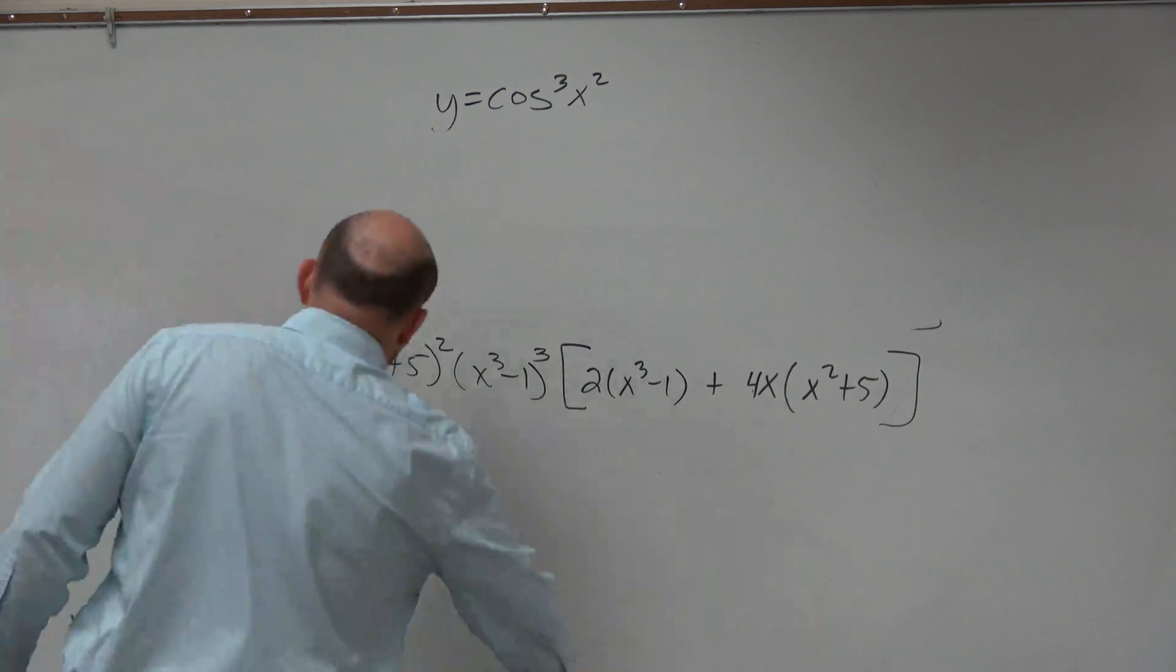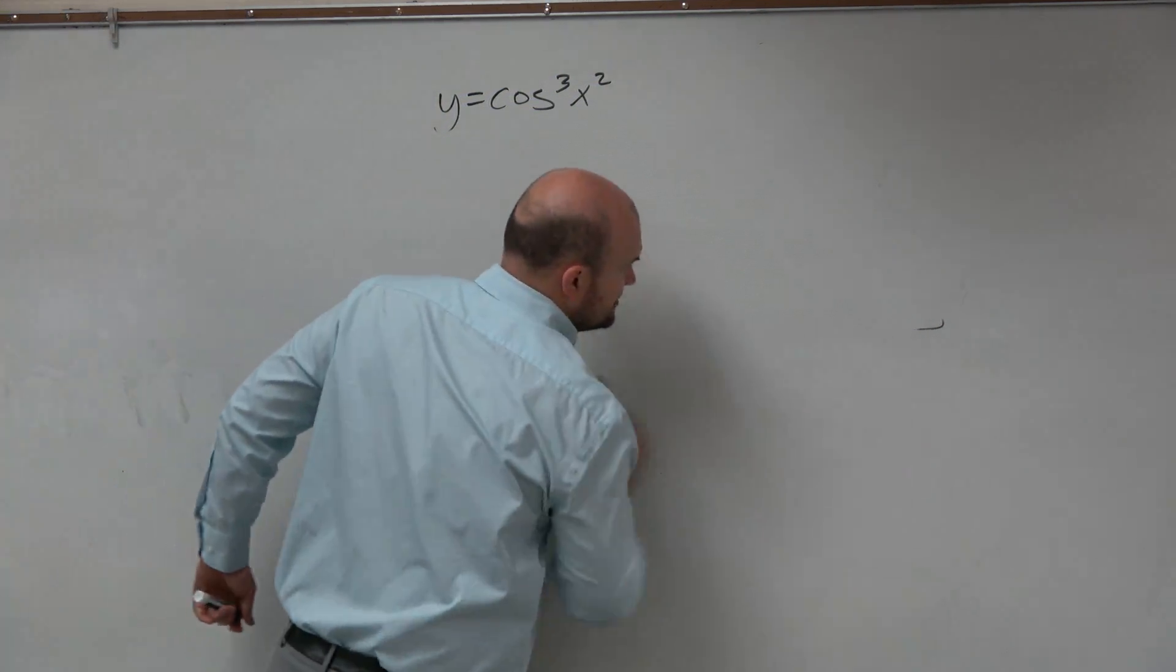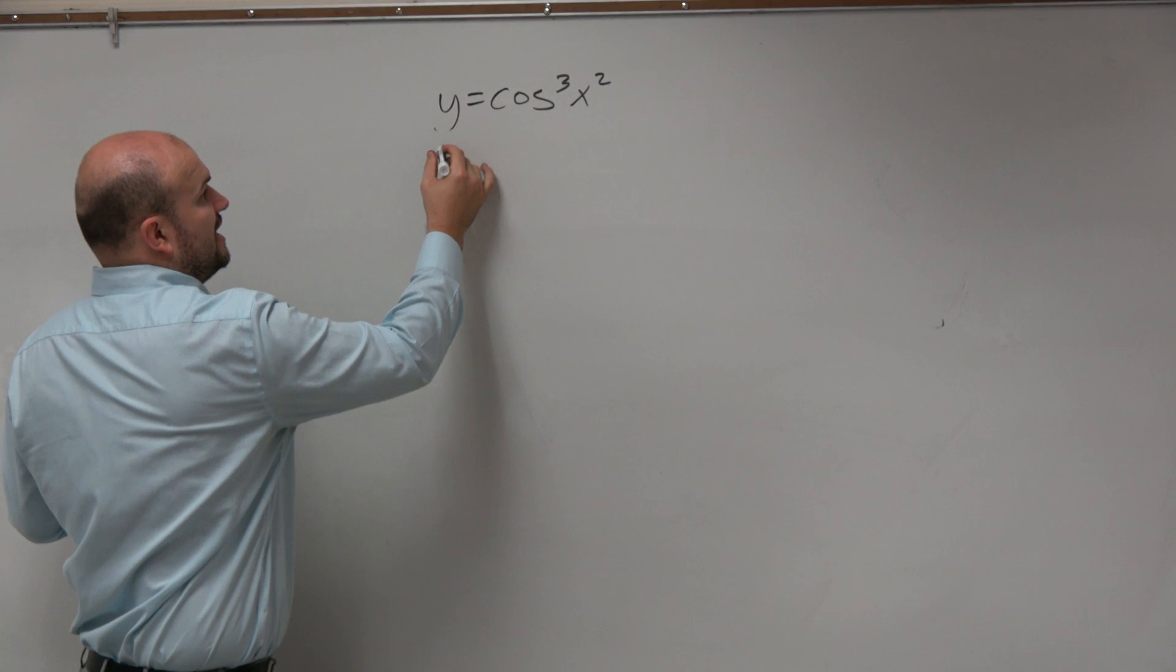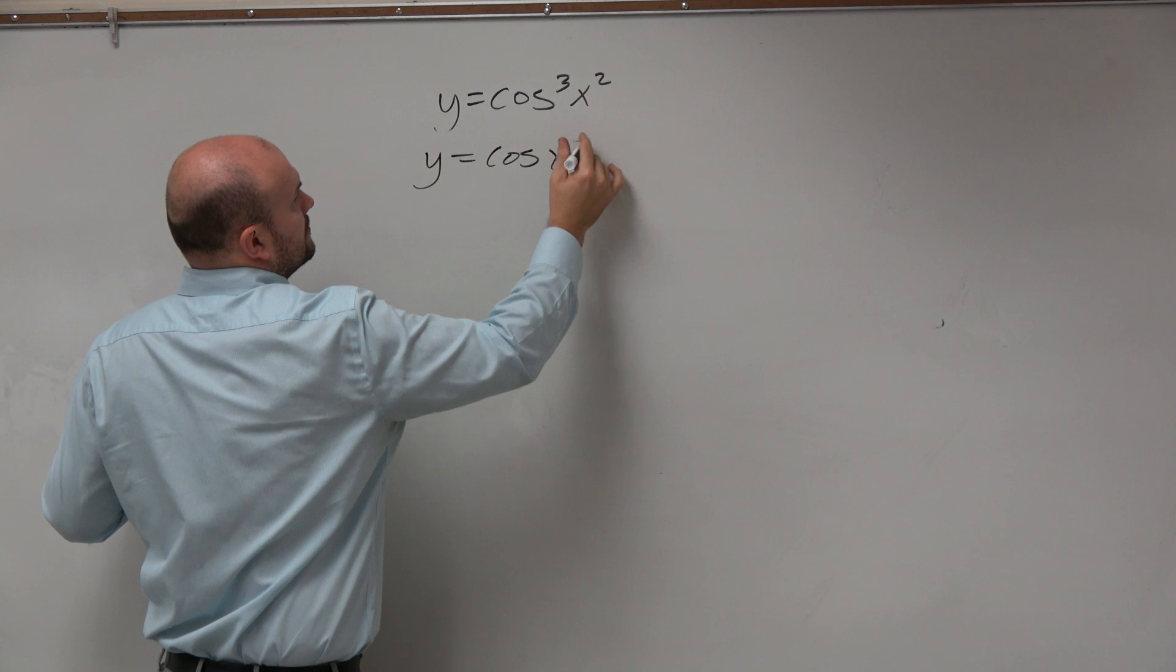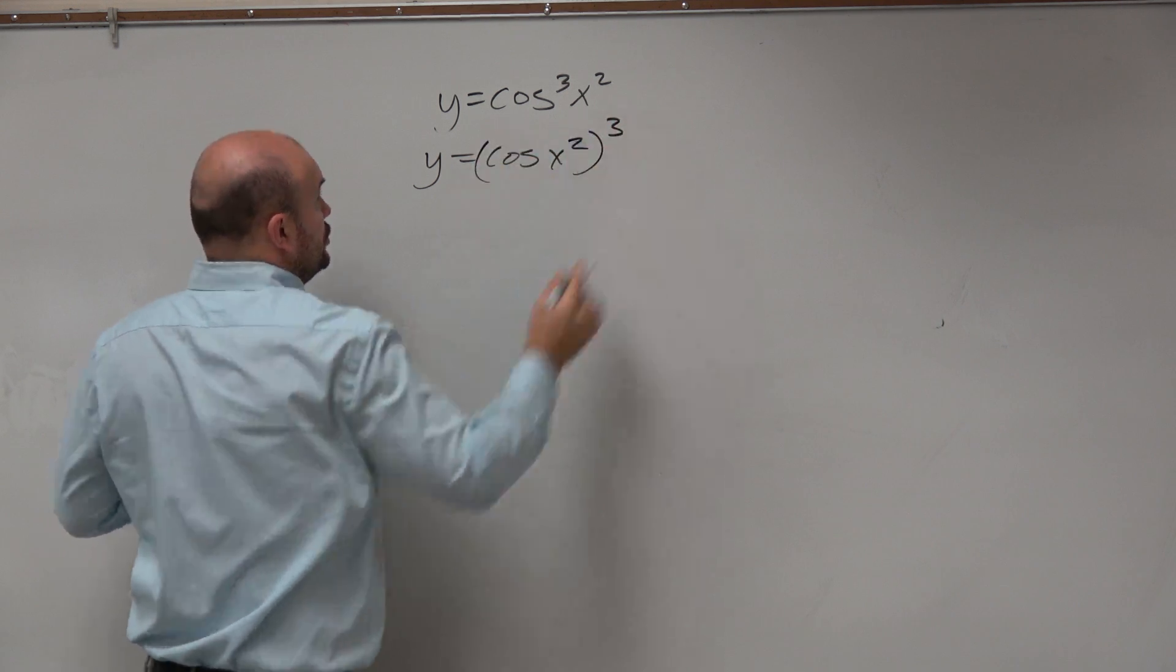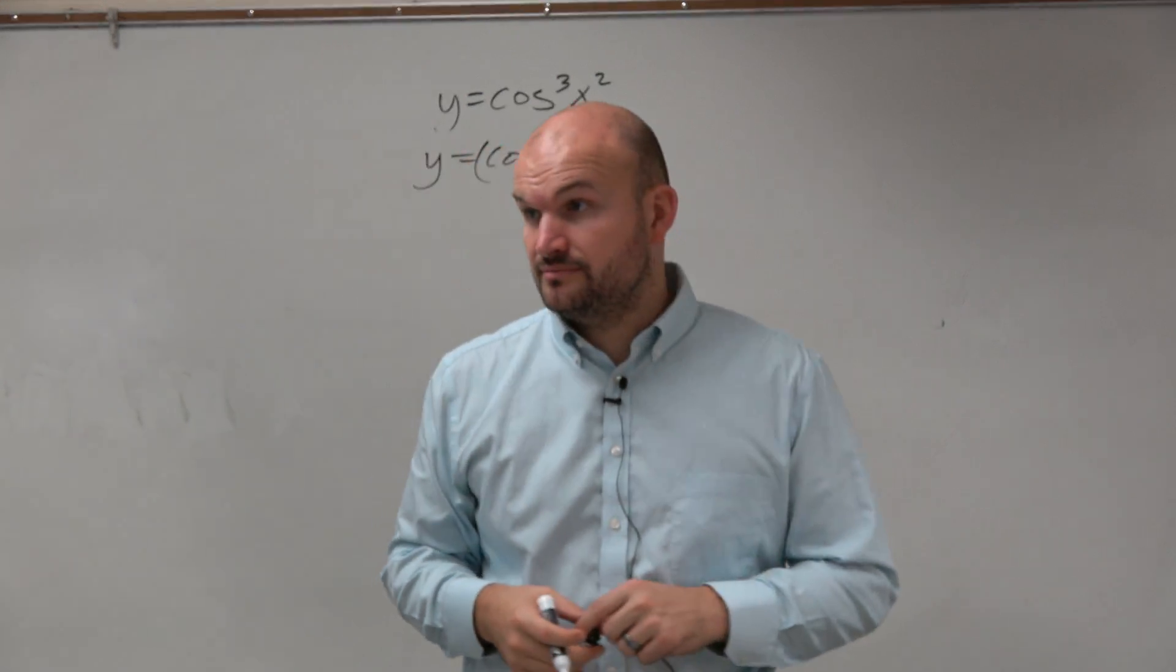So first thing on this. Again, guys, don't get confused with the cosine, how it's written. y equals cosine of x squared cubed is really what we're dealing with, right?